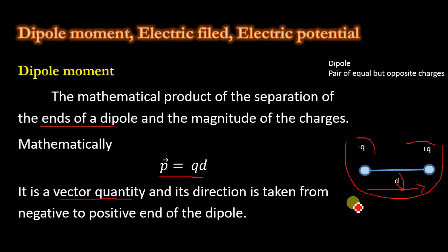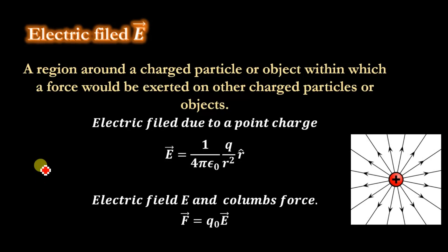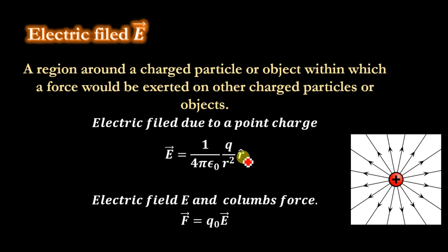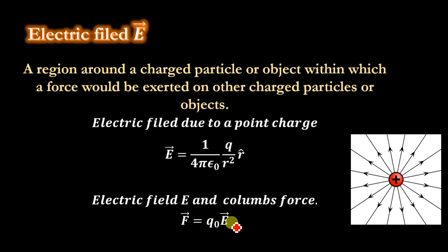We will determine the electric field due to a dipole and the potential at a point P due to the dipole. Electric field is a region around a charged particle or object within which a force would be exerted on other charged particles. The electric field due to a point charge is given by E = (1/4πε₀)(q/r²) r̂. The electric field E and Coulomb force F are related by F = q₀E, where q₀ is the test charge.